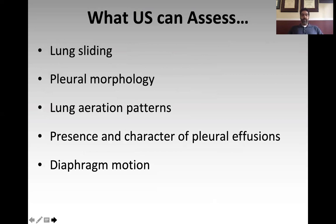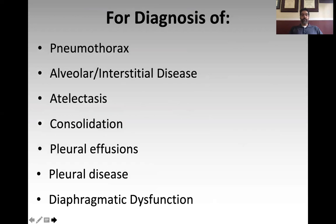Ultrasound can also guide respiratory management. Portable chest x-rays in the ICU often show areas of white at the base of the lung, and it can be tough to say whether that white is collapse, consolidation, effusion, or a combination. Ultrasound is really good at helping you differentiate between those disease states. It's also very useful in guiding procedures. The specific things we assess, typically in this order, are: lung sliding, pleural morphology, lung aeration patterns, pleural effusions, and diaphragm motion.